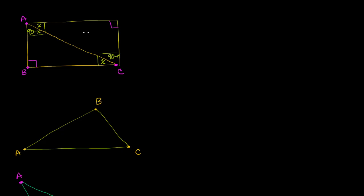This rectangle has two of our original triangles in it. So we can write that the area of triangle ABC is going to be equal to one half times the area of our entire rectangle. Let me add another point here — let me call this D. So it's one half the area of rectangle ABCD.